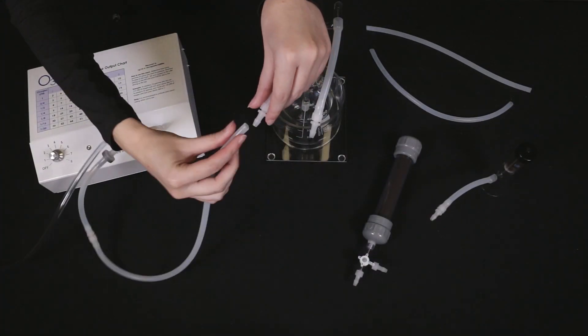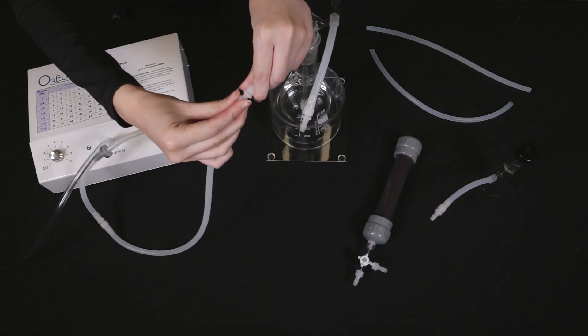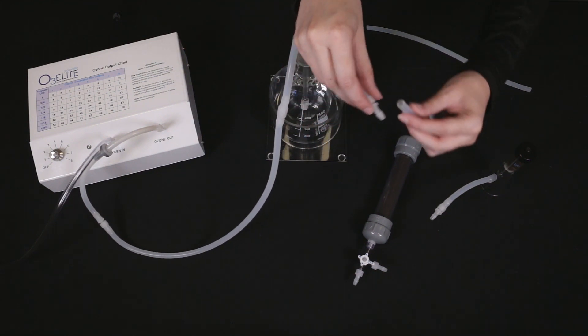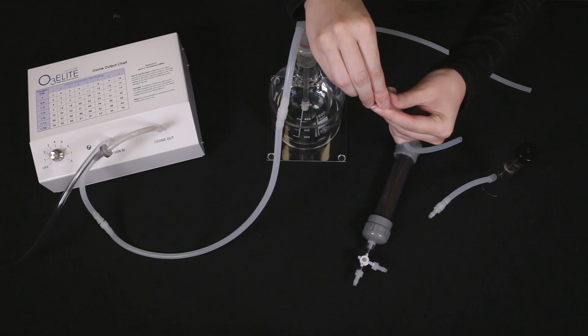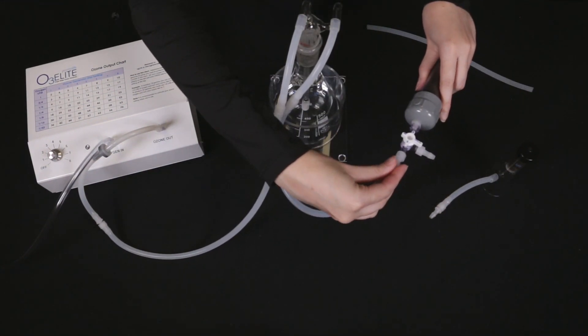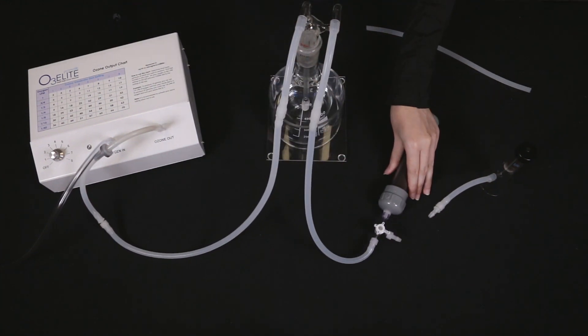Now, connect the other end of the 5 feet of silicone tubing to the glass straw that goes all the way into the humidifier, which we also call the ozone-in straw. Then connect the 3 feet of silicone tubing to the other straw of the humidifier called the ozone-out straw, and the other end of the tubing to the bottom of the ozone destruct system.